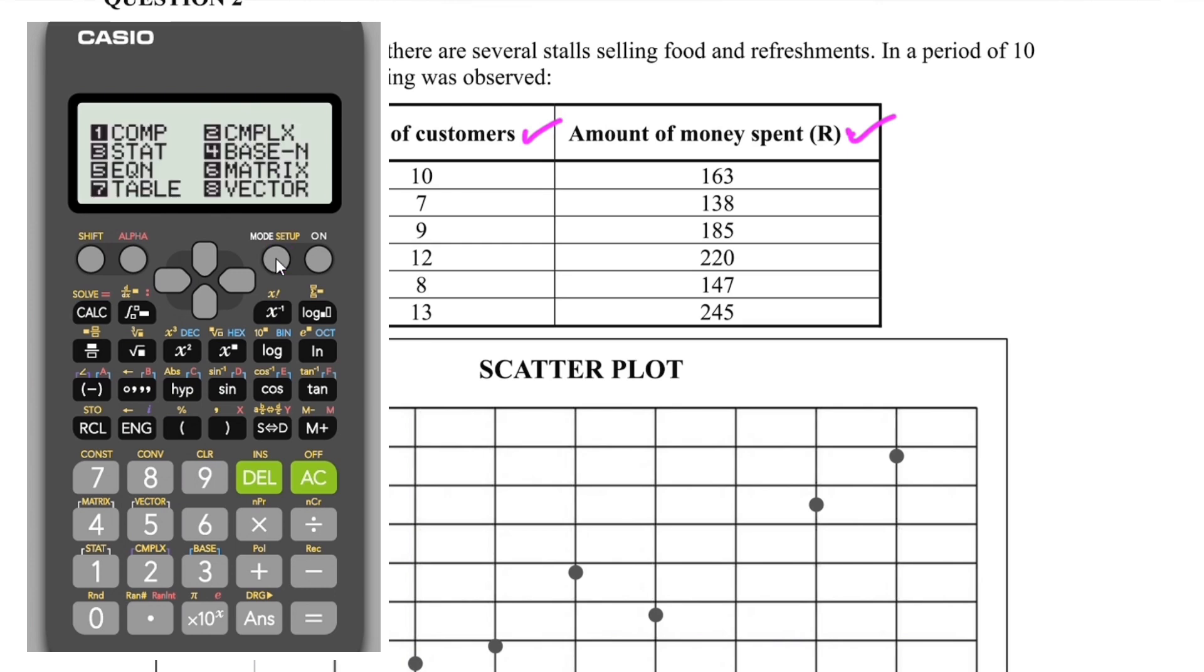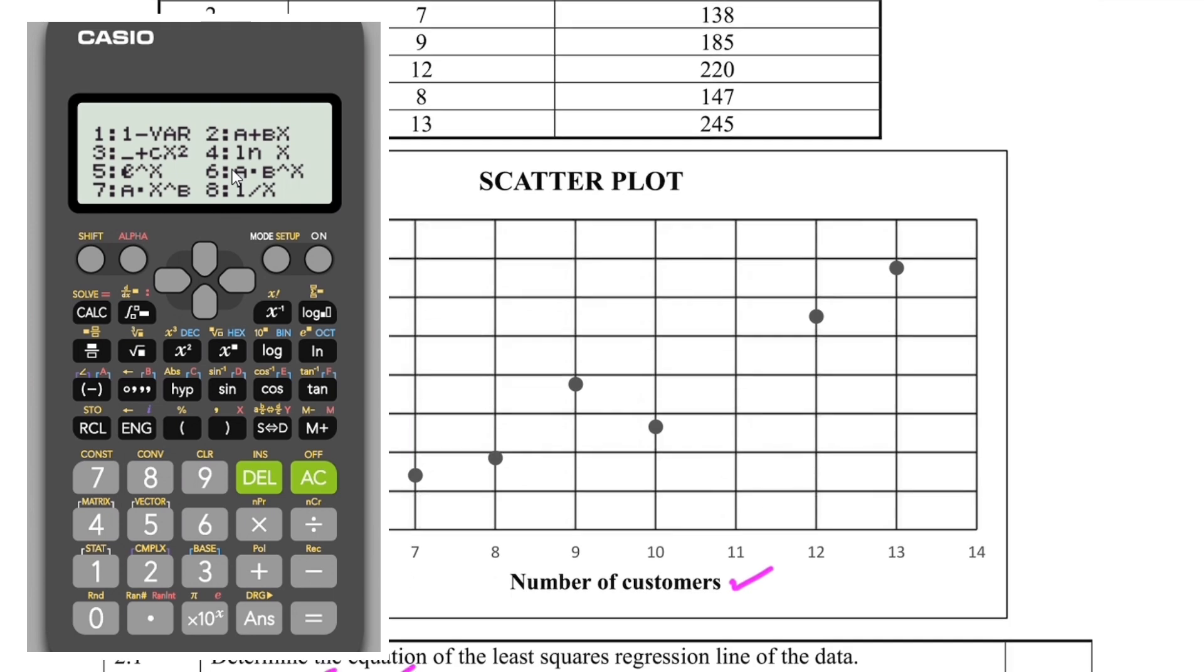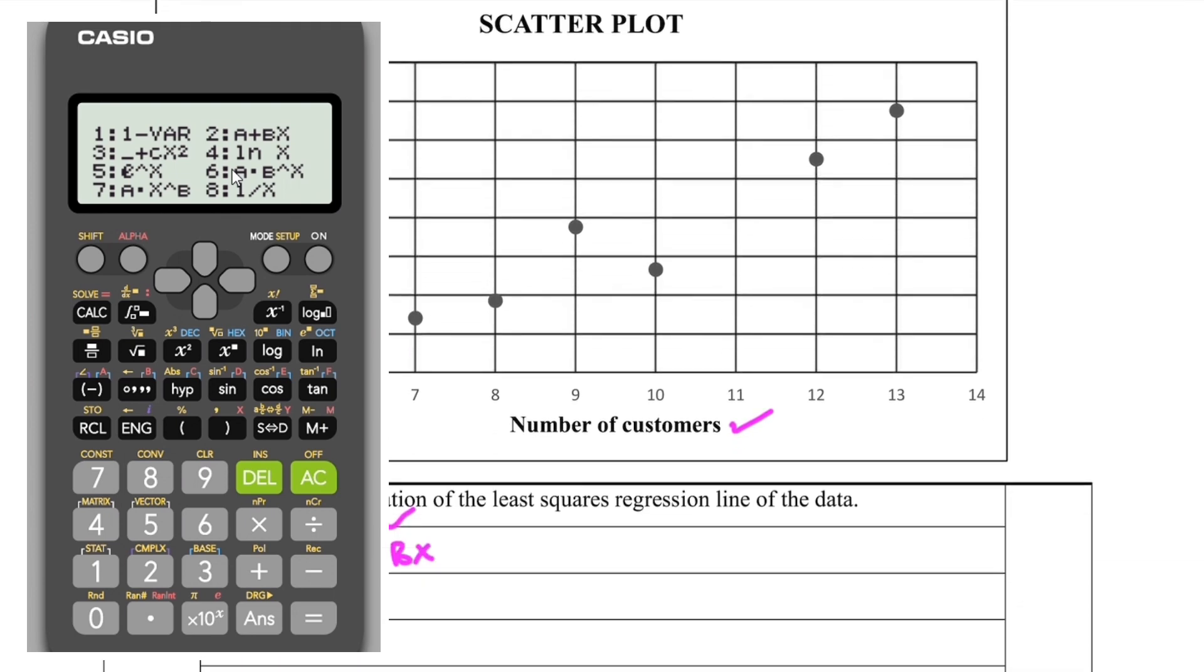So let's go ahead and do that. You want to press alpha and you press mode. After you do that, you press the option that has stat on it. In this calculator it happens to be three, so I'm going to press three, and then I will press number two. It says a plus bx. That is the option that is going to allow you to enter your data and have the least squares regression line.